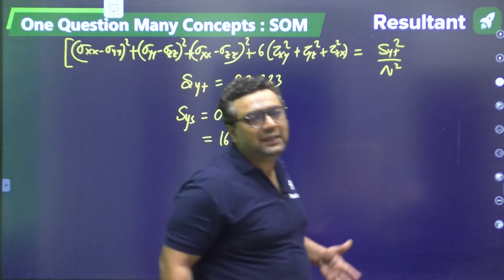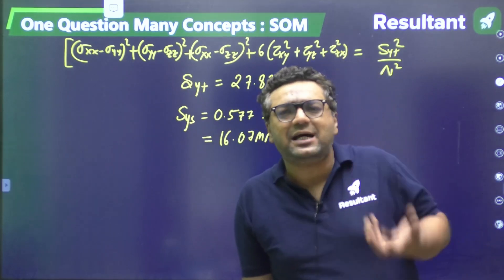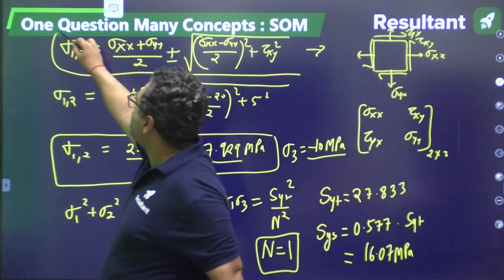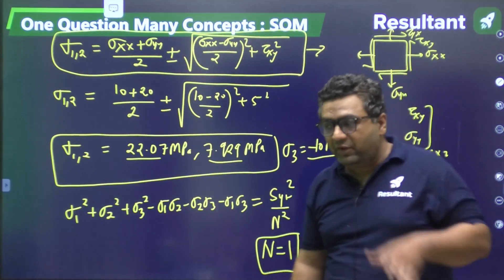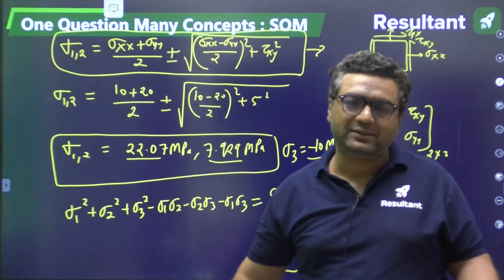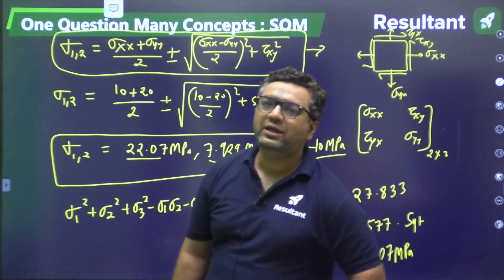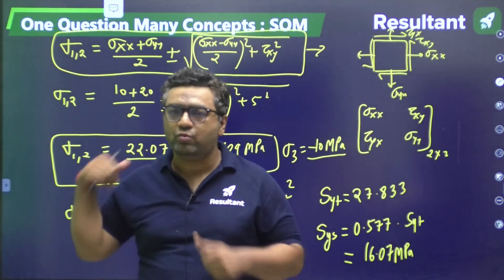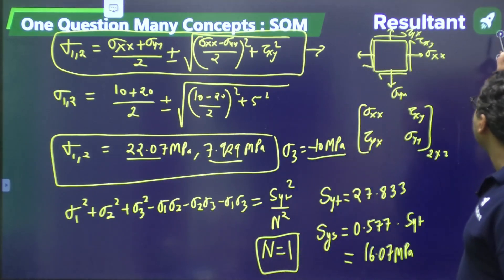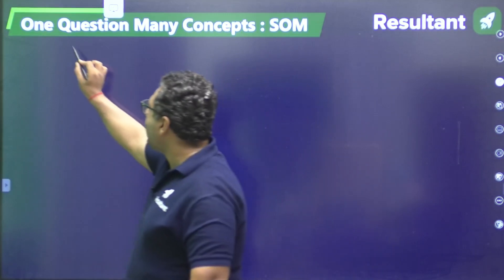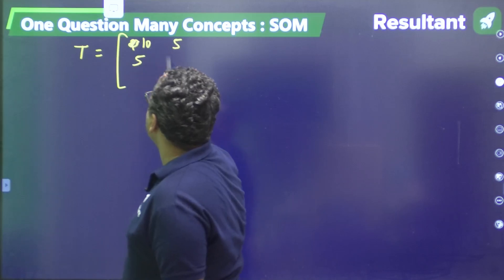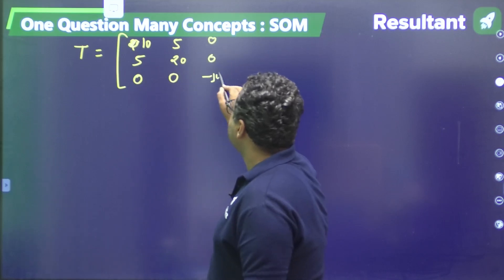If someone asks to find principal stresses directly when all shear stresses are non-zero, there is no simple direct formula. There are three ways to calculate principal stresses: the formula given earlier, Mohr's circle, and the eigenvalue method. When using eigenvalues: for a given matrix, we compute the determinant of (T − λI) = 0 to get a cubic characteristic equation.